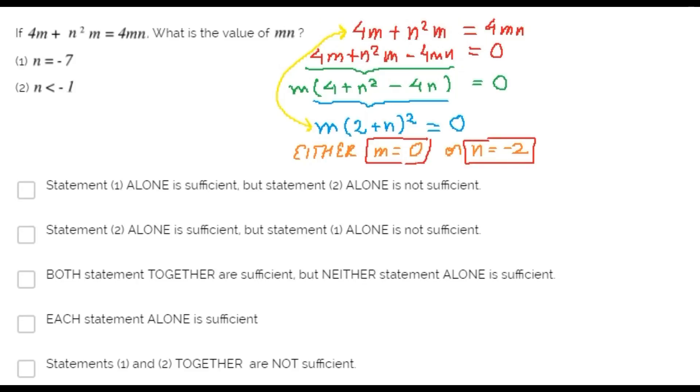Let's go ahead with statement one. n is negative 7. Since n is negative 7, then we know that m must be zero since this equation is true. Therefore, m times n must be zero. Statement one alone is sufficient to answer the question.